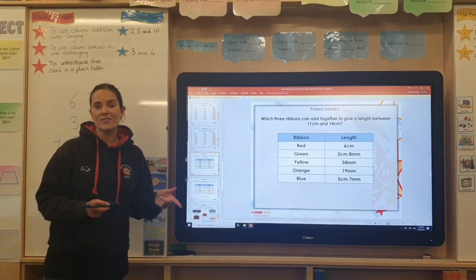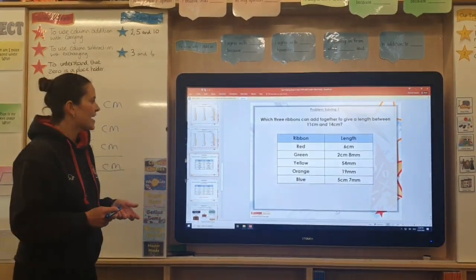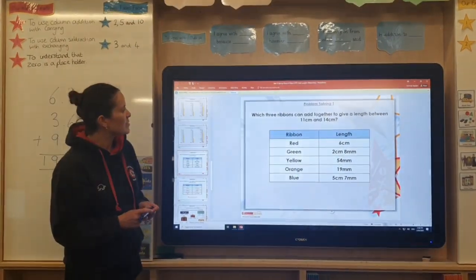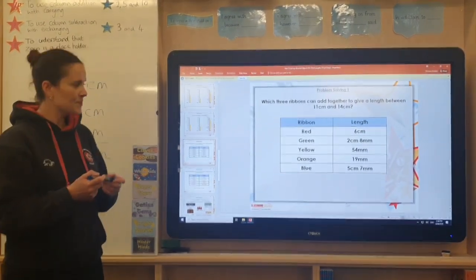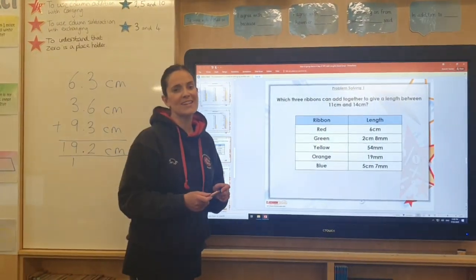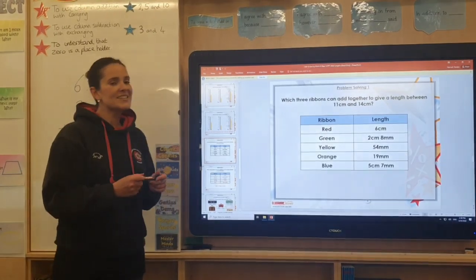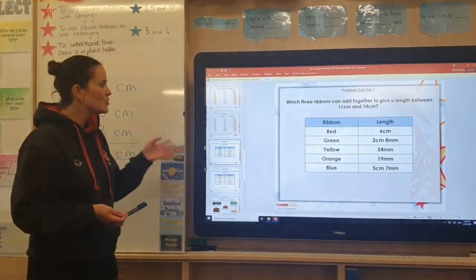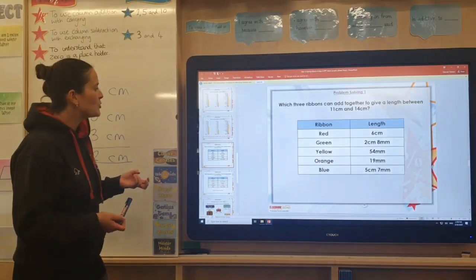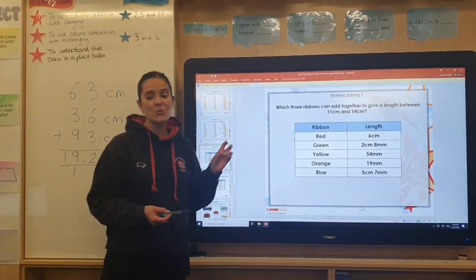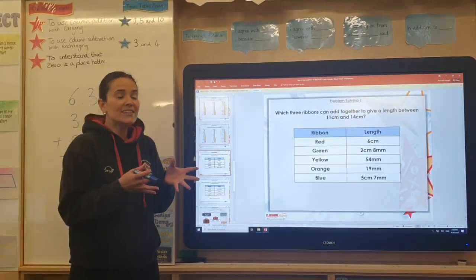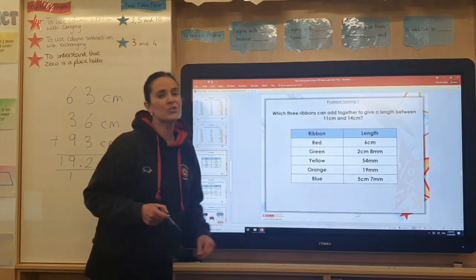And there's one more example I'd like to talk you through today, which is this question here. It says, which three ribbons can add together to give a length between eleven centimetres and fourteen centimetres? This is a bit of a trial and improvement type question. You might not get the right answer the first time round. But you would need to select three of those measurements. And you would need to add them up and see if the total length was between those two measurements there.